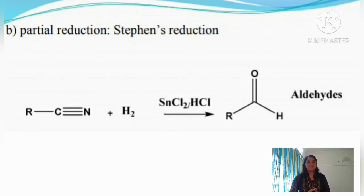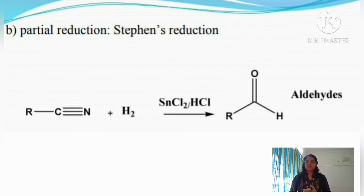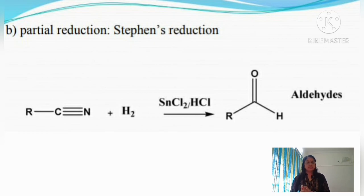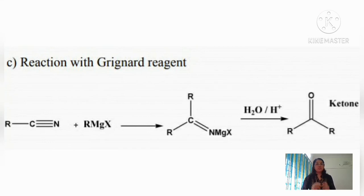For partial reduction of alkyl cyanide: when alkyl cyanide is treated with SnCl₂ (stannous chloride) and HCl in acidic medium, the cyanide is reduced to an aldehyde. This partial reduction is called the Stephen reduction, and it is given by alkyl cyanide.